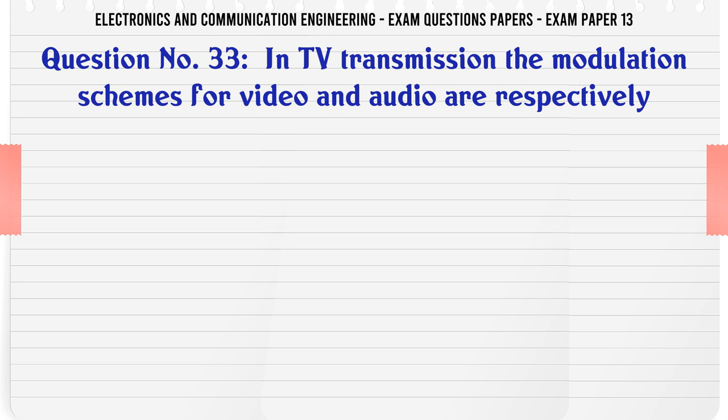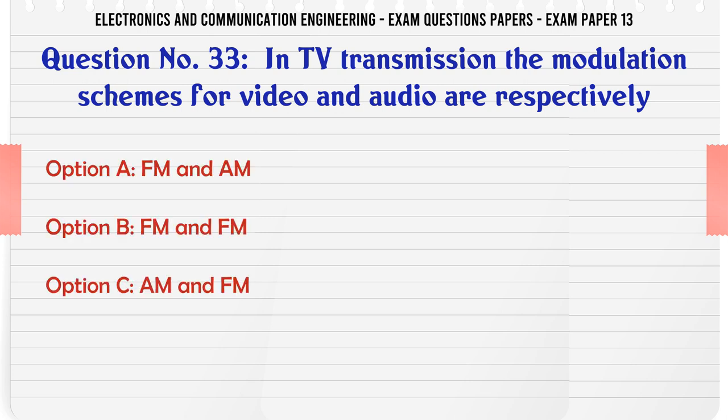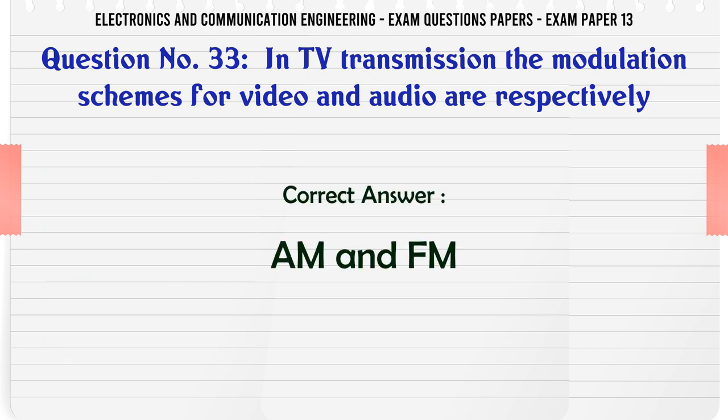In TV transmission, the modulation schemes for video and audio are respectively: A: FM and AM, B: FM and FM, C: AM and FM, D: AM and AM. The correct answer is AM and FM.